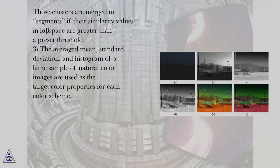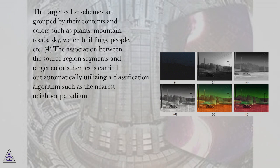Step 3: The averaged mean, standard deviation, and histogram of a large sample of natural color images are used as the target color properties for each color scheme. The target color schemes are grouped by their contents and colors such as plants, mountain, roads, sky, water, buildings, people, etc.